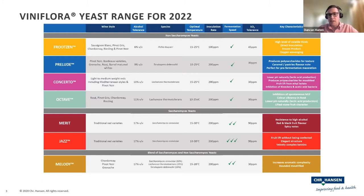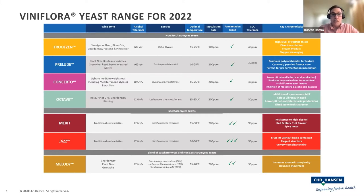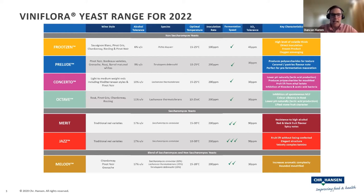The next section down is our Saccharomyces yeast, and we're really not going to talk much about Saccharomyces today, other than to say they're both really good products. Merit is a fructophilic yeast — very robust. It will ferment up to 17% alcohol, but we've actually seen it work in things like Amarone at well over 18%. Being fructophilic, it gives a really nice profile and is a great alternative to more traditional fructophilic yeasts. We also have a product called Jazz — a direct inoculation Saccharomyces, so there's no rehydration. You literally add it as a dry powder. It's a lovely product in Syrah, Merlot, more fruit-driven Cabernet, and also Rosé.